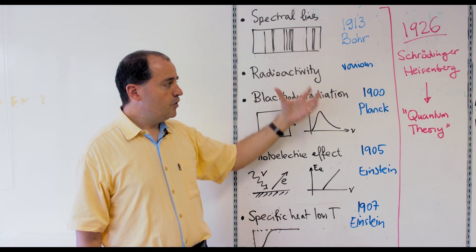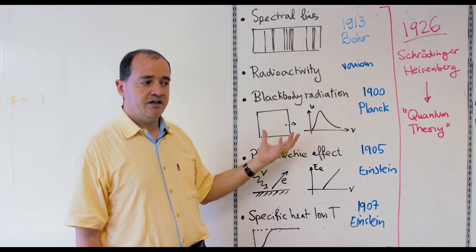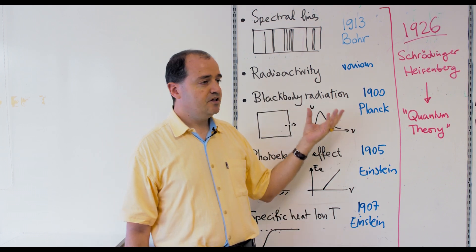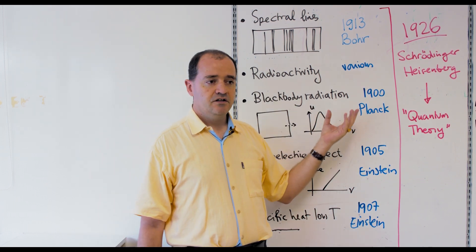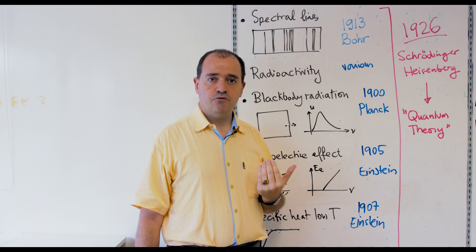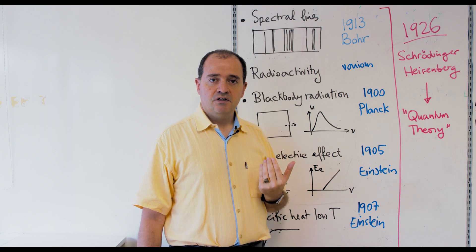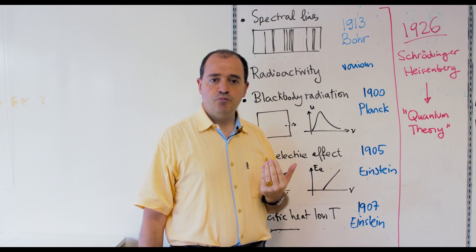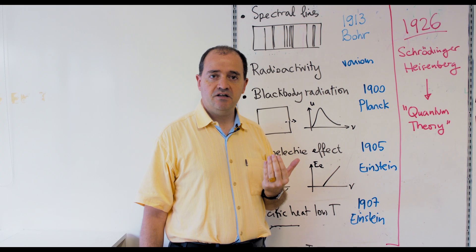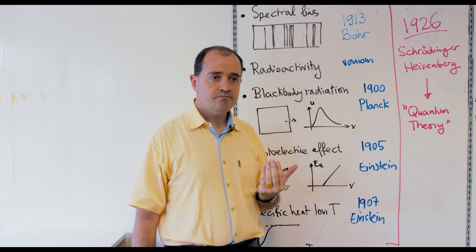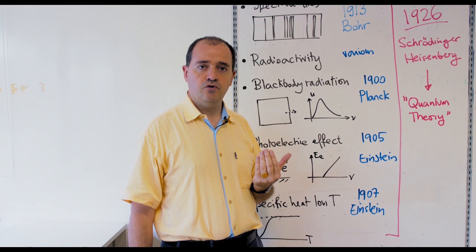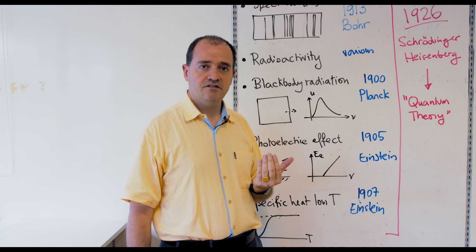All these went on for a couple of decades until in 1926, independently, Schrödinger and Heisenberg produced a mathematical formalism that was immediately proved to be actually the same — two versions of the same mathematical structure. And this is what is called quantum theory, and this is what you are going to learn in this class.